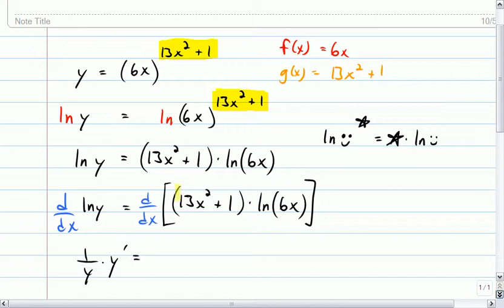When I get to taking the derivative of the right-hand side, I've got two functions. I've got the one in yellow multiplied by the one in blue. That's going to require the product rule. So, I'll leave the yellow one alone,